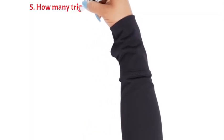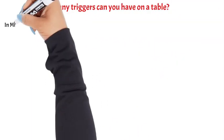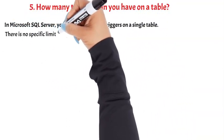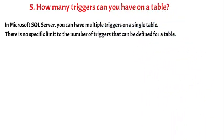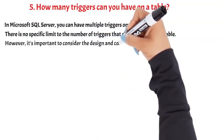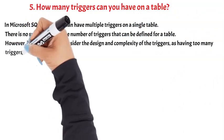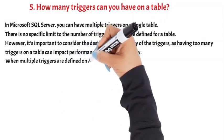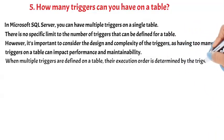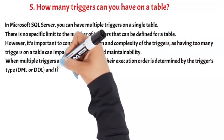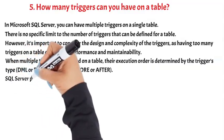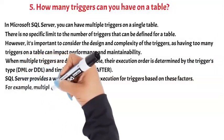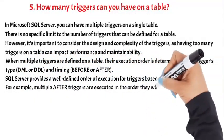Question 5: How many triggers can you have on a table? In Microsoft SQL Server, you can have multiple triggers on a single table. There is no specific limit to the number of triggers that can be defined for a table. However, it's important to consider the design and complexity of the triggers, as having too many triggers on a table can impact performance and maintainability. When multiple triggers are defined on a table, their execution order is determined by the trigger's type (DML or DDL) and timing (BEFORE or AFTER). SQL Server provides a well-defined order of execution for triggers based on these factors. For example, multiple AFTER triggers are executed in the order they were created.